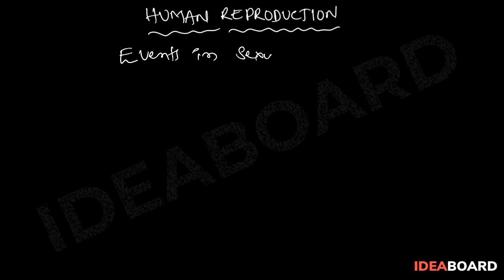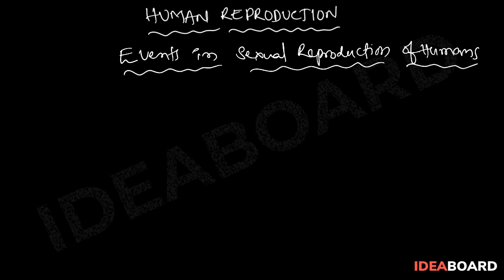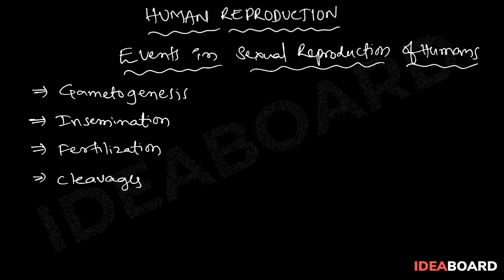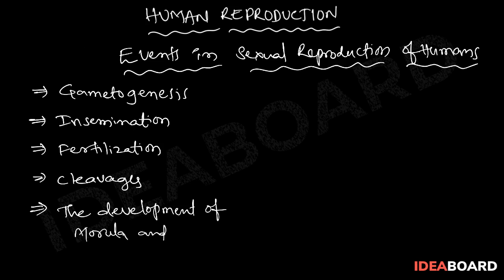Sexual reproduction in humans includes the following events: gametogenesis, insemination, fertilization, cleavages, and the development of morula and blastocyst.